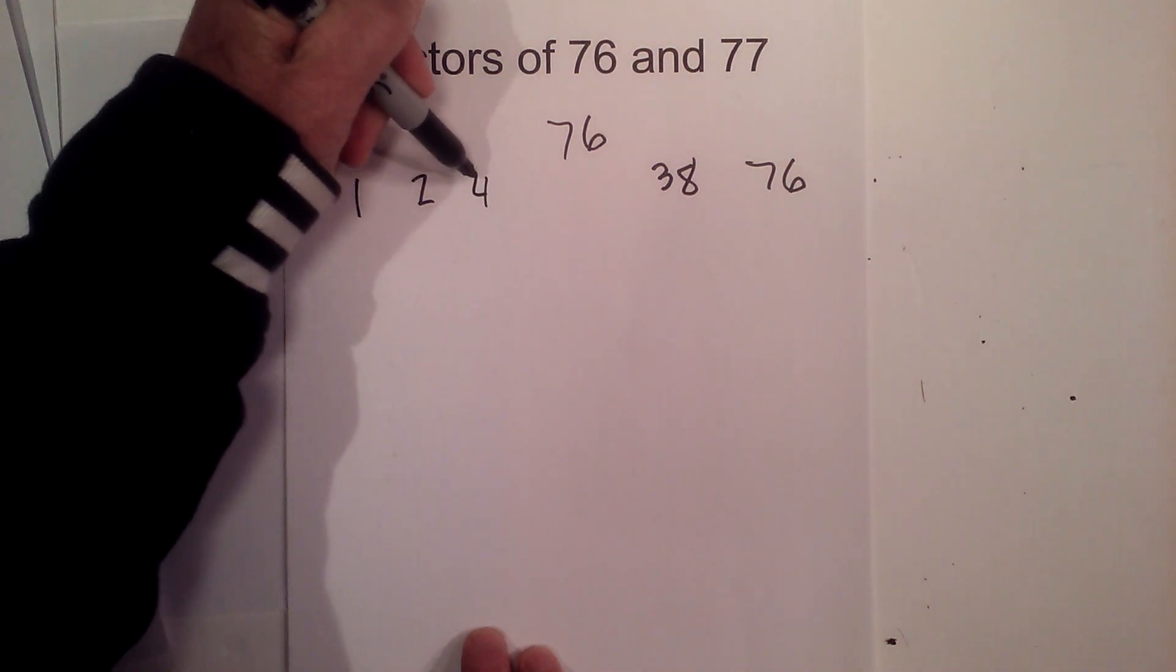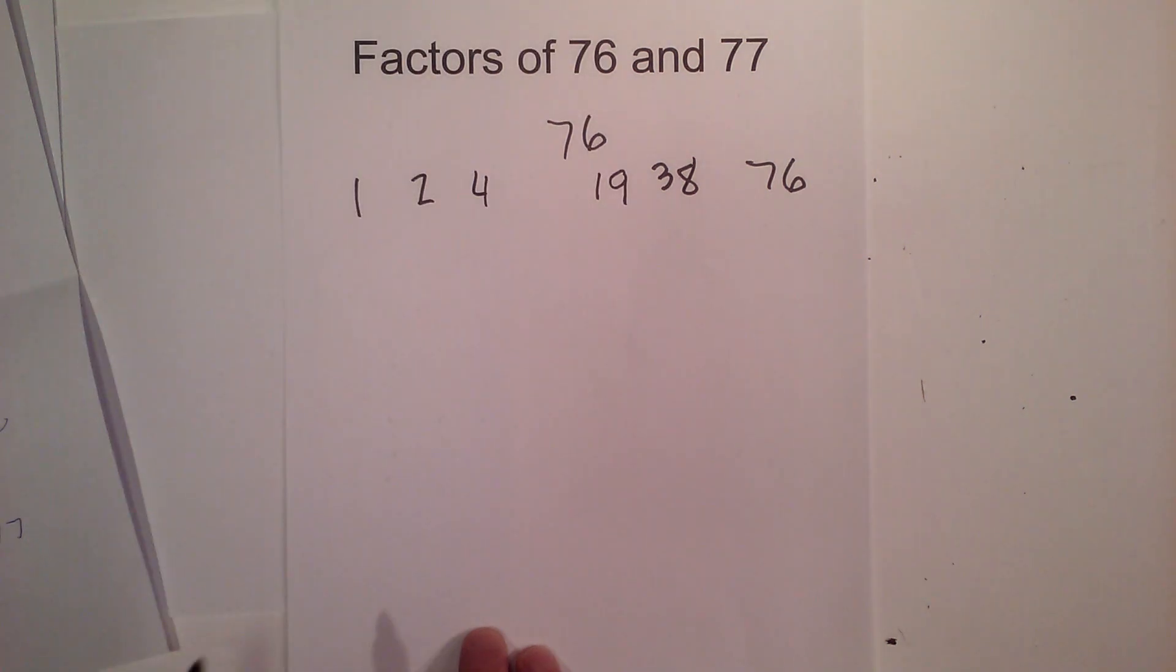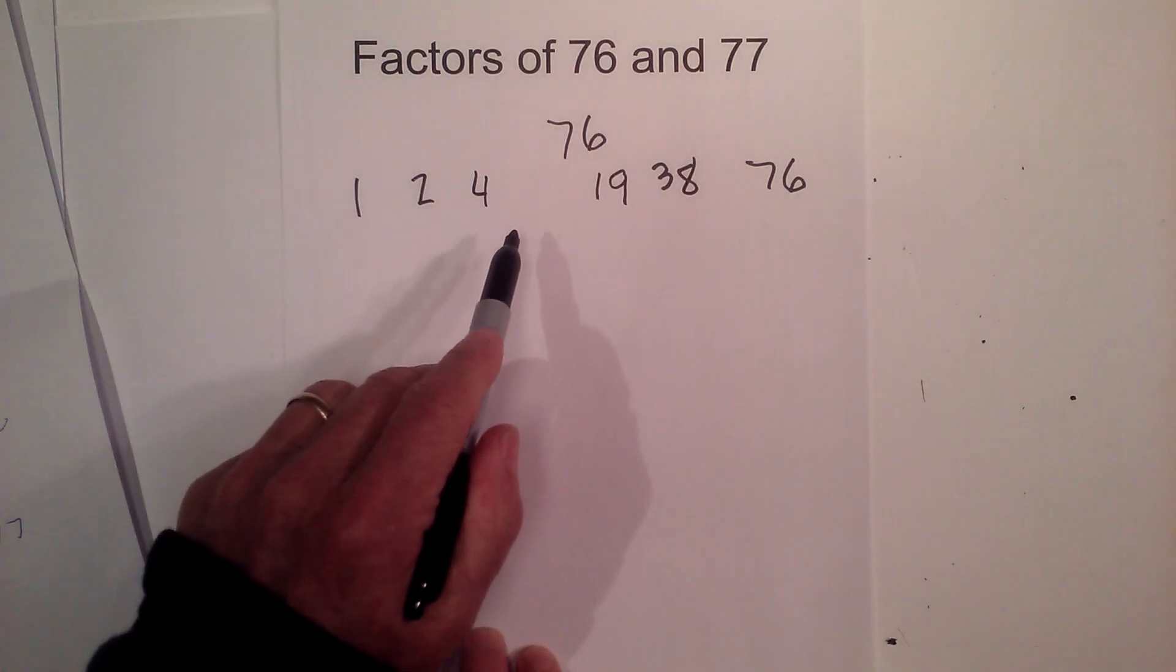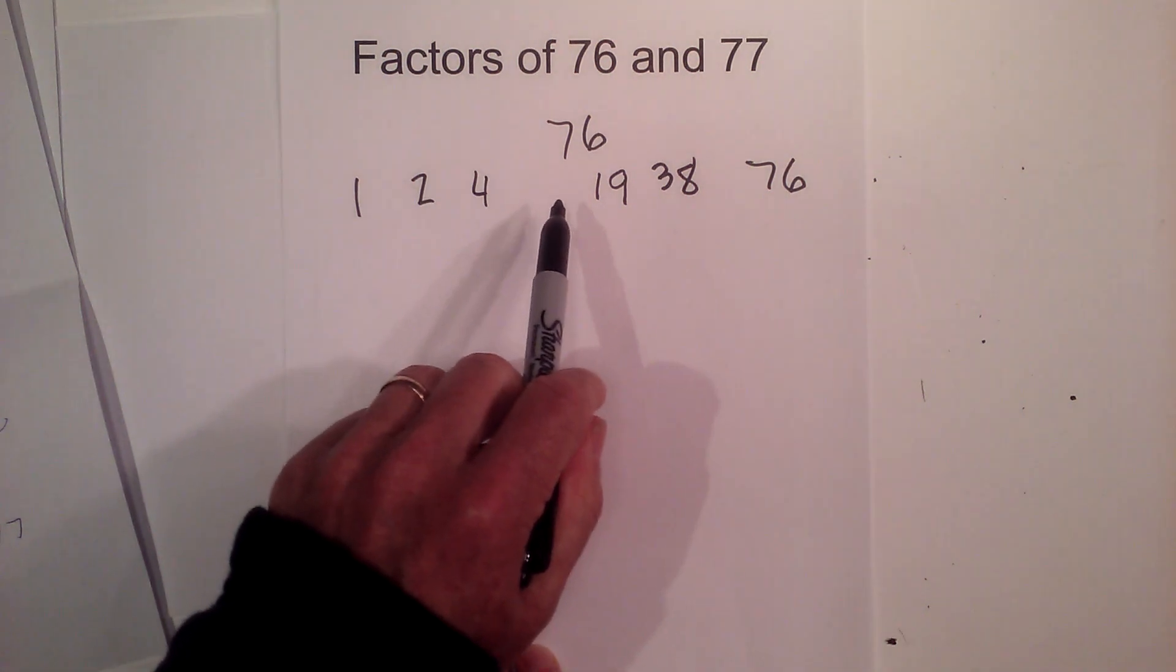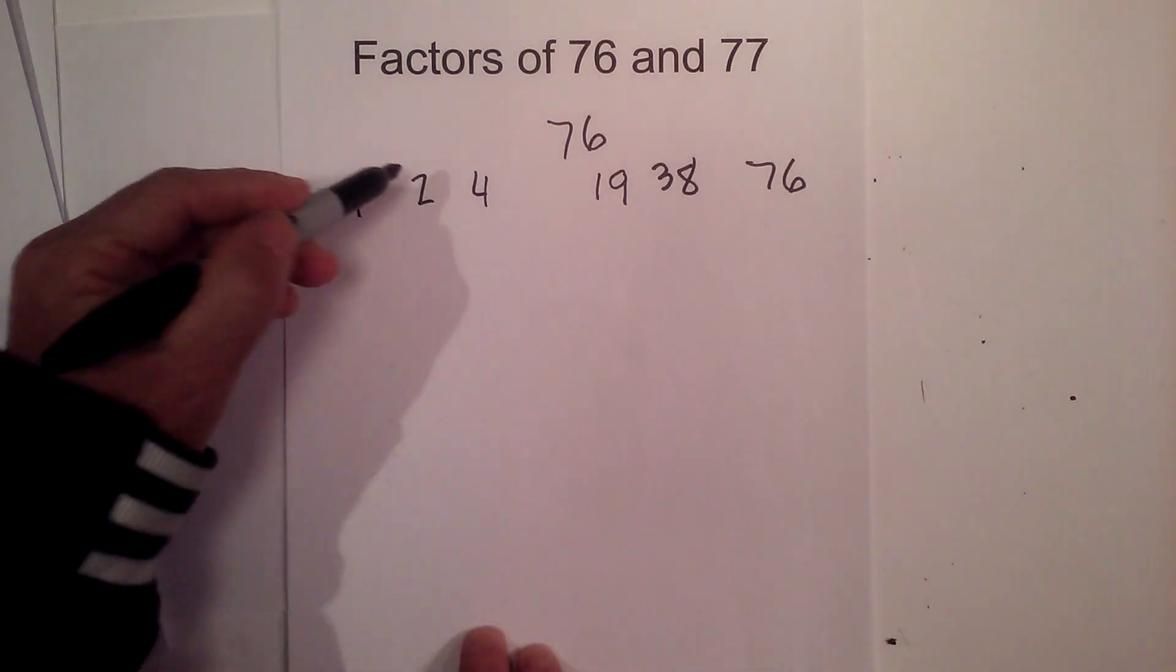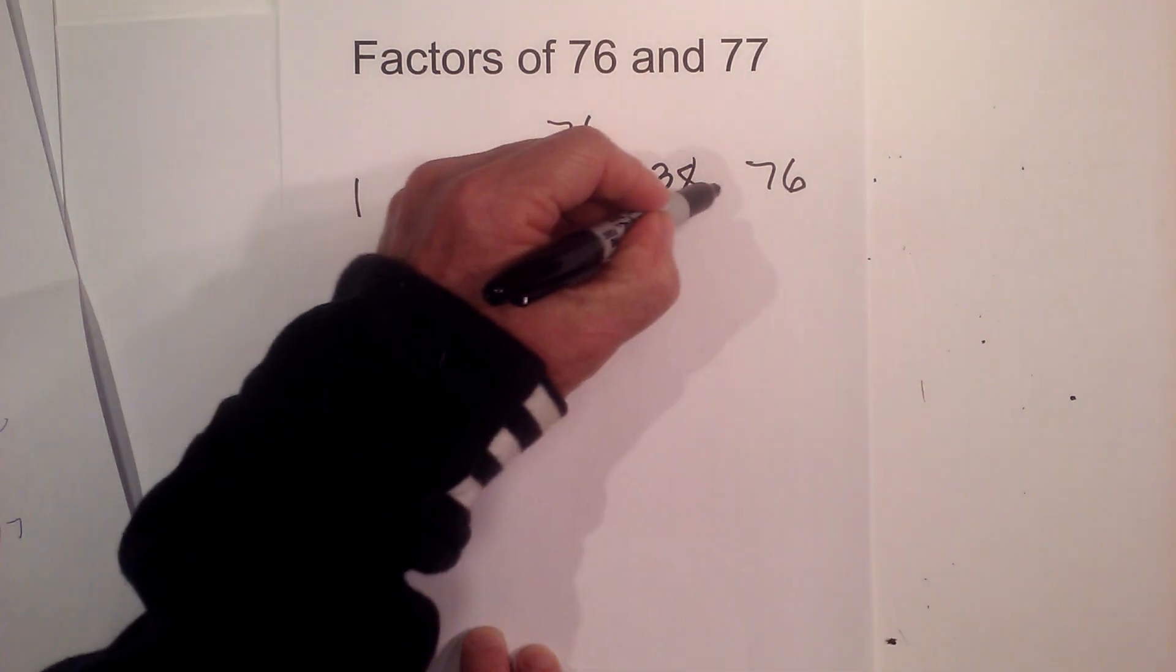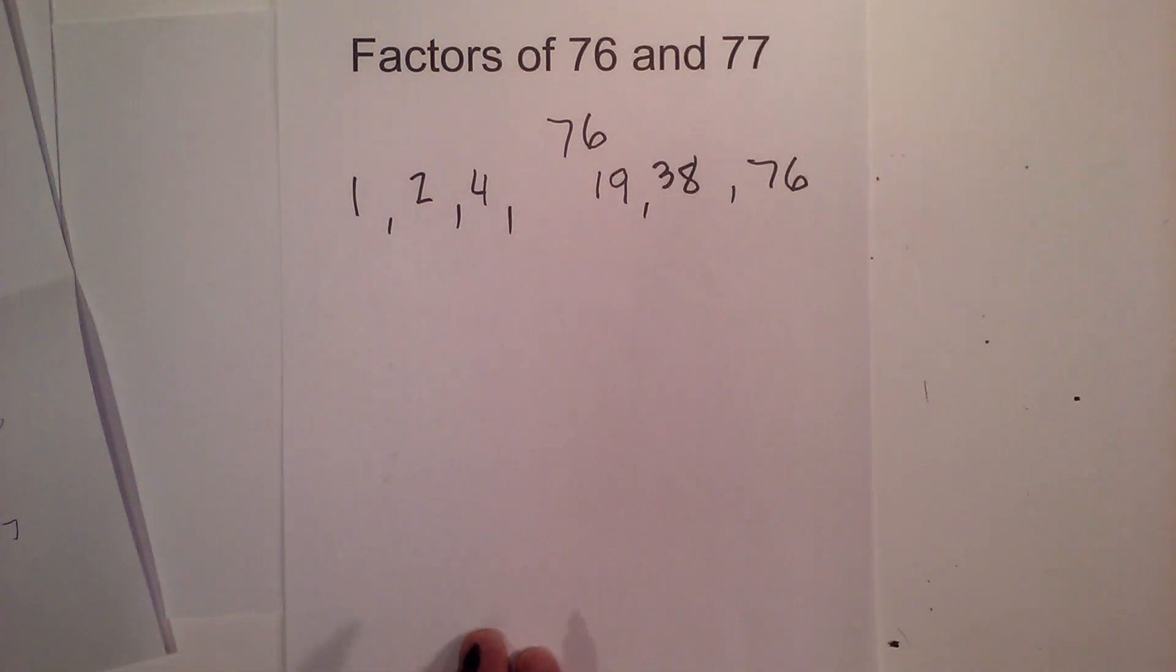And then if we go 4 times 19, that equals 76. And then 5, 6, 7, 8, 9, 10, 11, 12, 13, 14, 15, 16, 17, 18 do not go into 76. So the factors of 76 are 1, 2, 4, 19, 38, and 76.